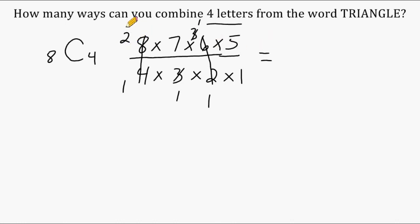We have a 2 right here, a 7 right here, and 2 times 7 is 14. 14 times 1 is 14, and 14 times 5 is 70. So there are 70 ways that we can combine four different letters from the word triangle. And that is how you can perform an nCr function by using a shortcut.